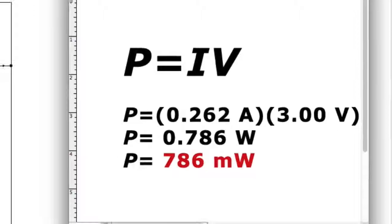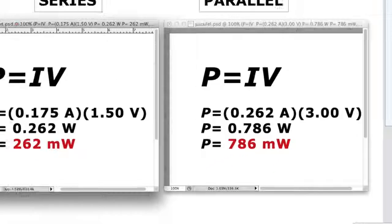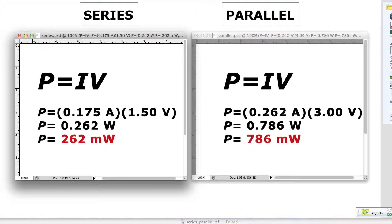So in final comparison, one can see that with greater current and higher voltage, bulbs connected in parallel will glow brighter than if connected in series.